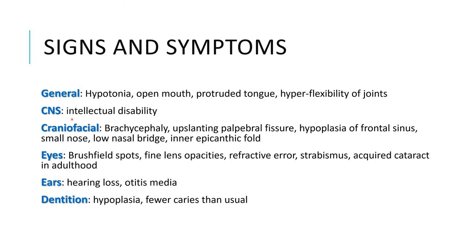The signs and symptoms of Down syndrome include low muscle tone or hypotonia, open mouth with protruding tongue, and hyperflexibility of joints. They are classically associated with intellectual disability. There is brachycephaly, upslanting palpebral fissures, hypoplasia of frontal sinuses, small nose, depressed nasal bridge, and inner epicanthic fold.